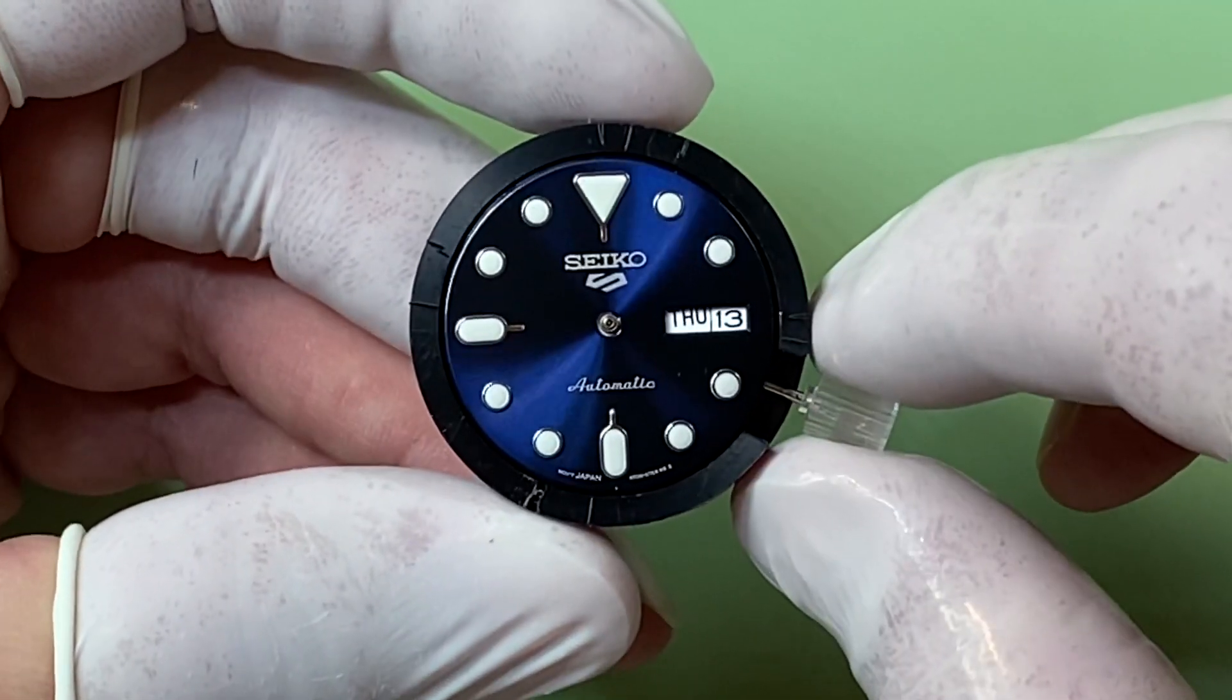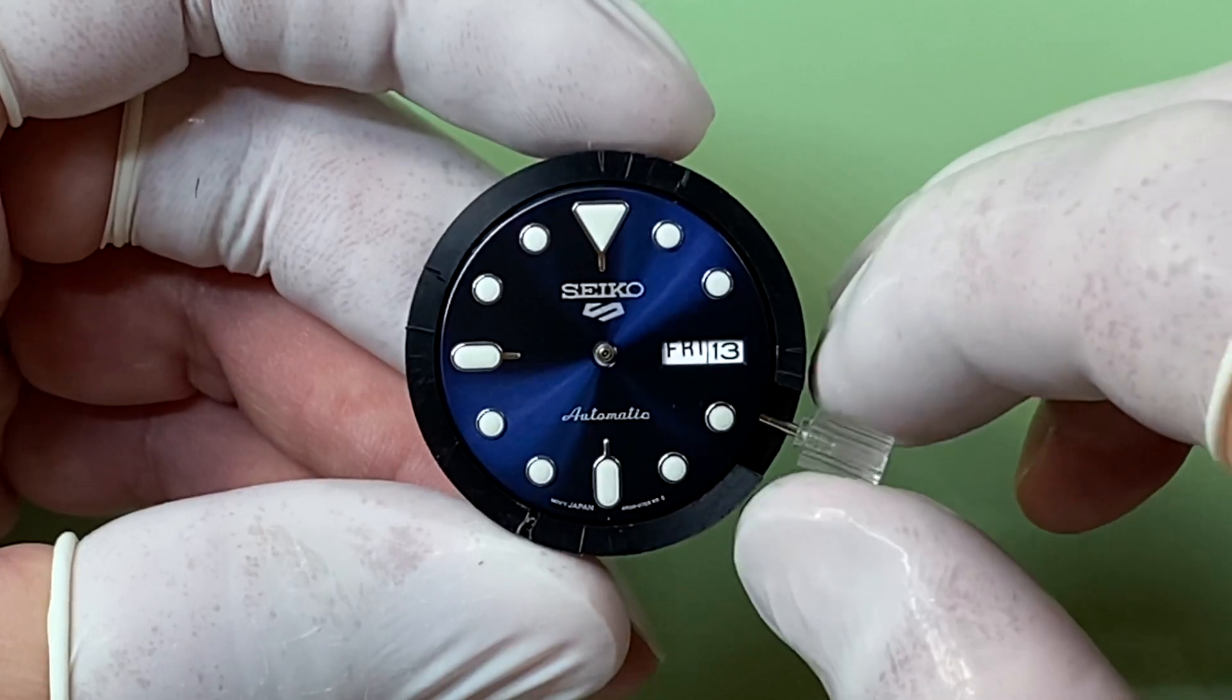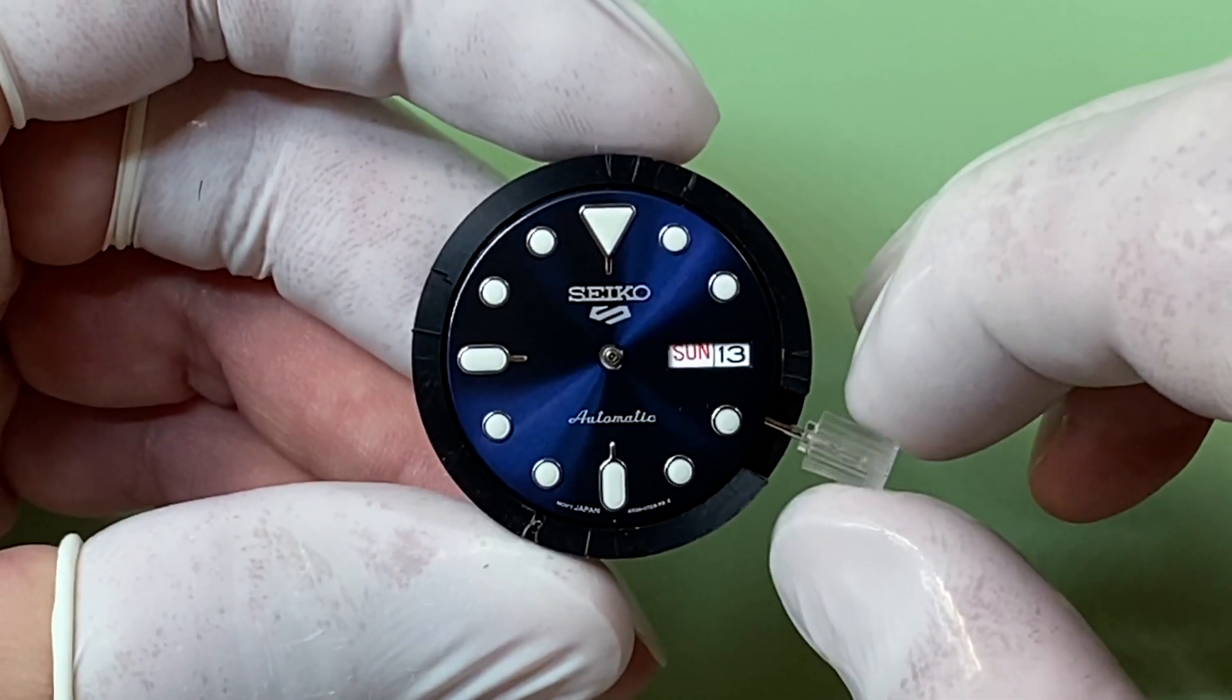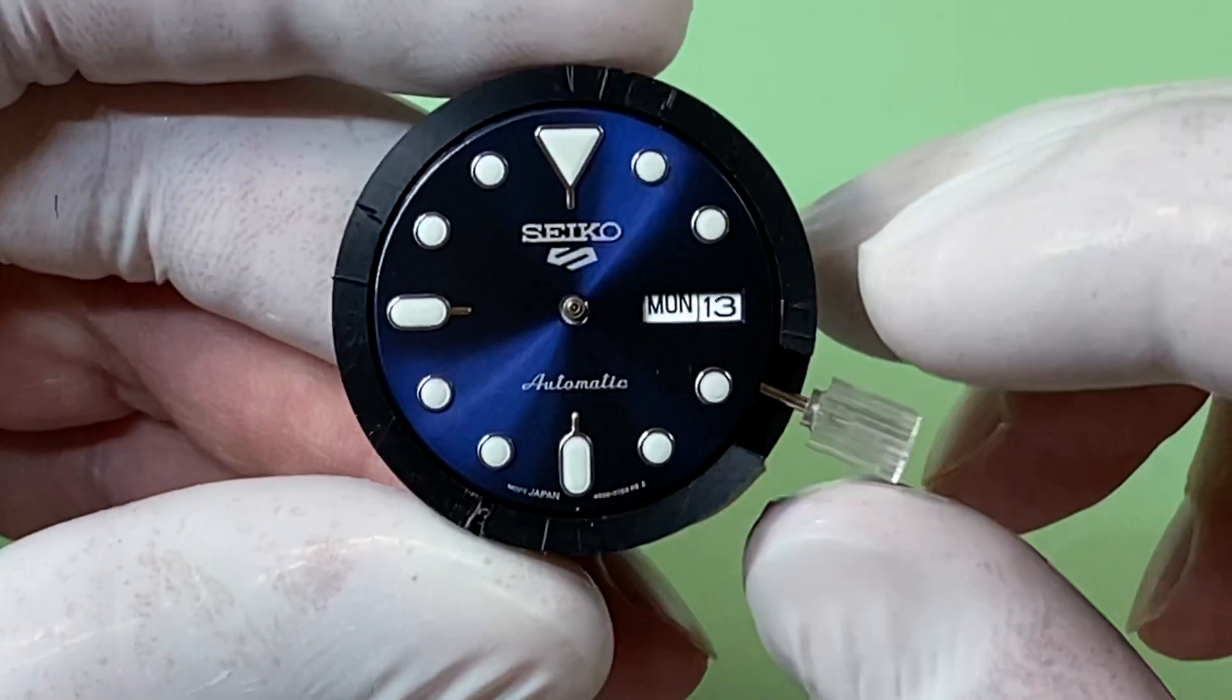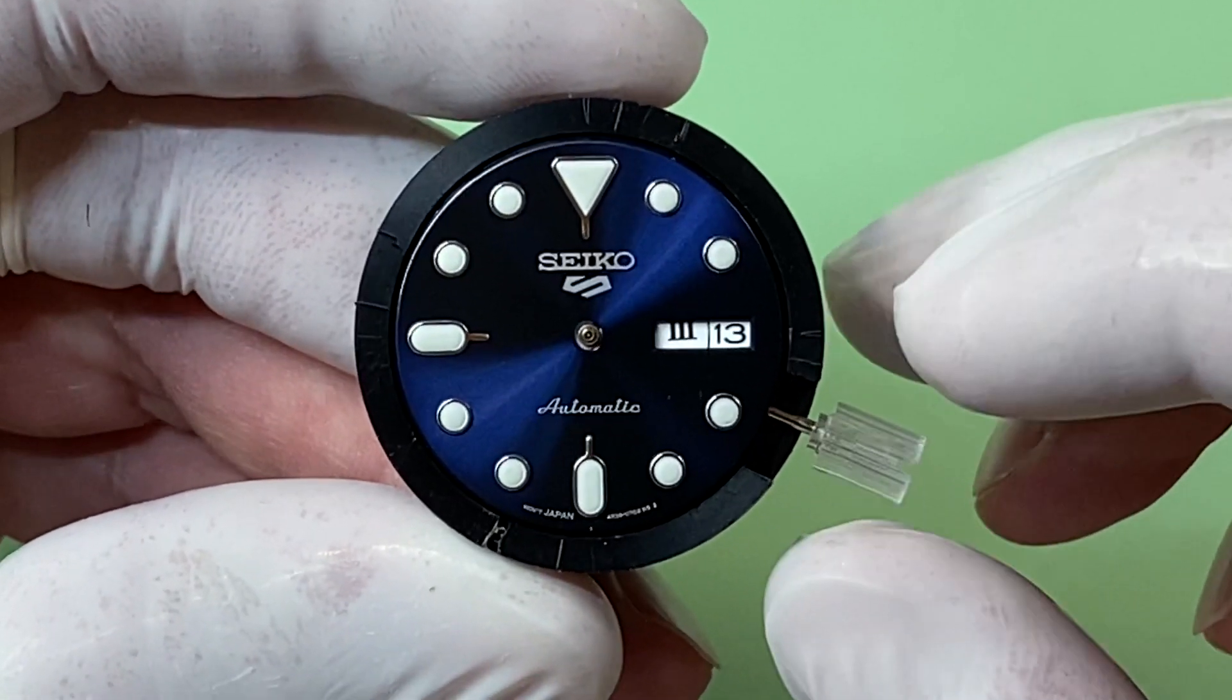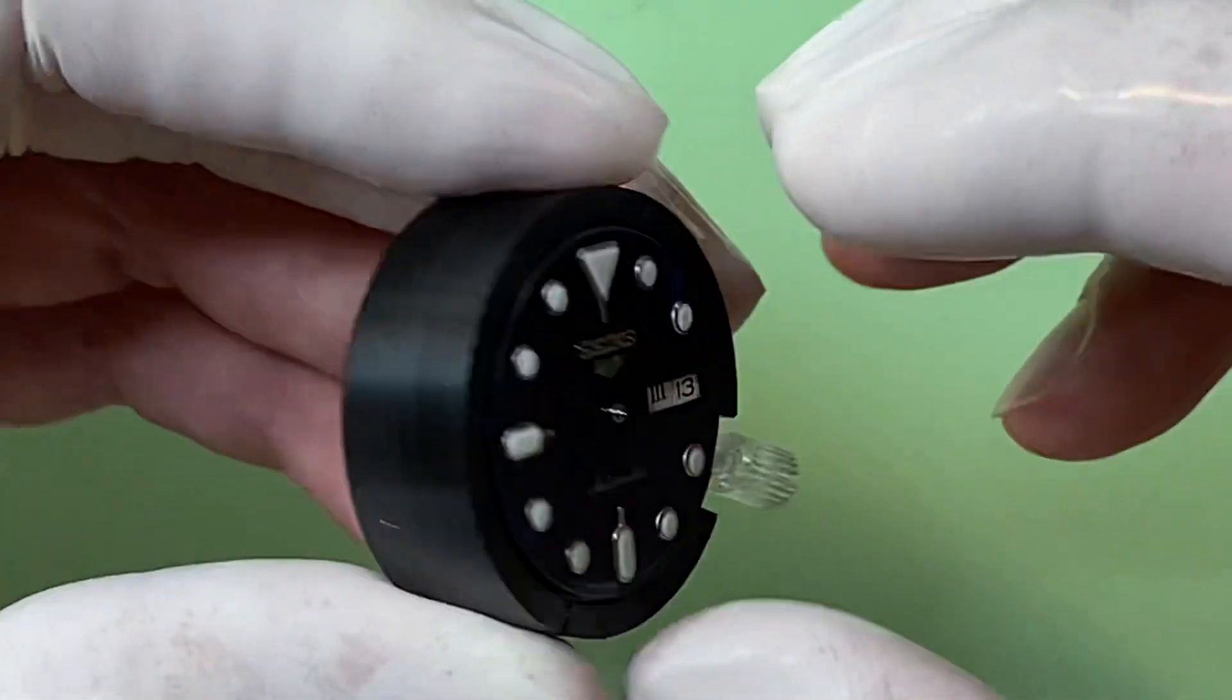This is apparently for the three o'clock crown position. As you can see, when you try to change the day, it's obviously not even with the date. That's because it's a three o'clock position day wheel—you would need the four o'clock one.